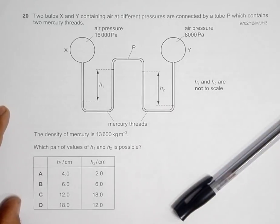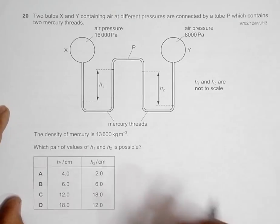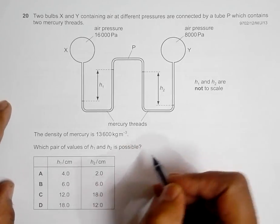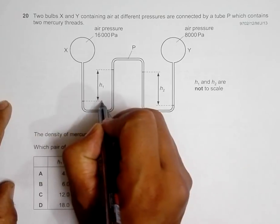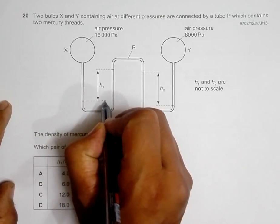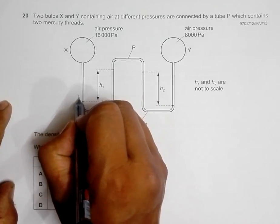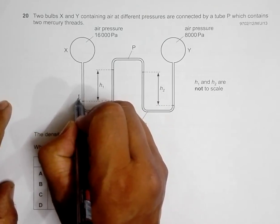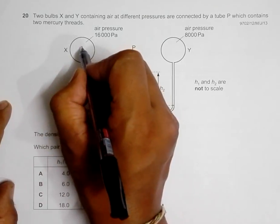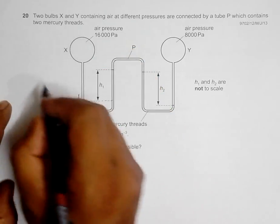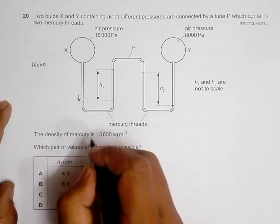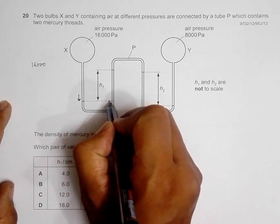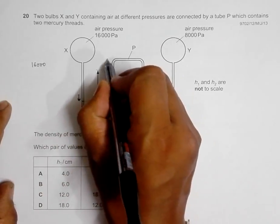First let us consider this region here. If I go here, the pressure here is equal to the pressure of this bulb which is 16,000 Pascal. The pressure here will be equal to the pressure here which is P.